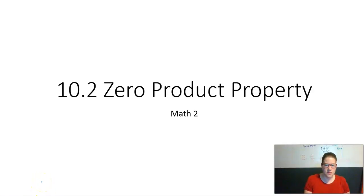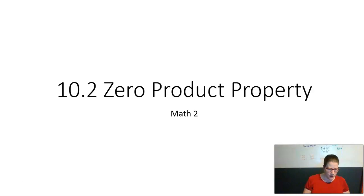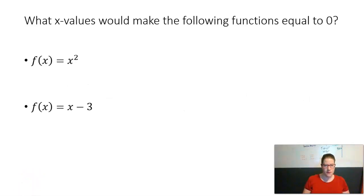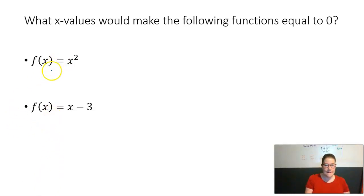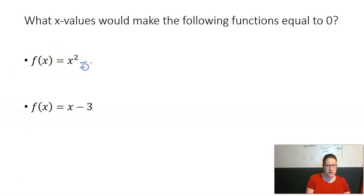As we continue talking about quadratics, we're going to look at something called the zero product property. First, let's look at a couple of equations. The first one is f(x) = x², which is quadratic. What this is asking is: what x value would make our function equal zero? If we set our function equal to zero and solve for x, we just have x² = 0, and taking the square root, x can only equal zero.